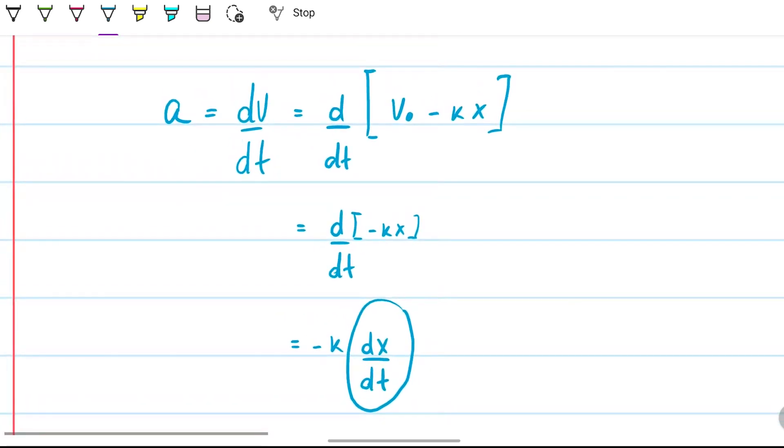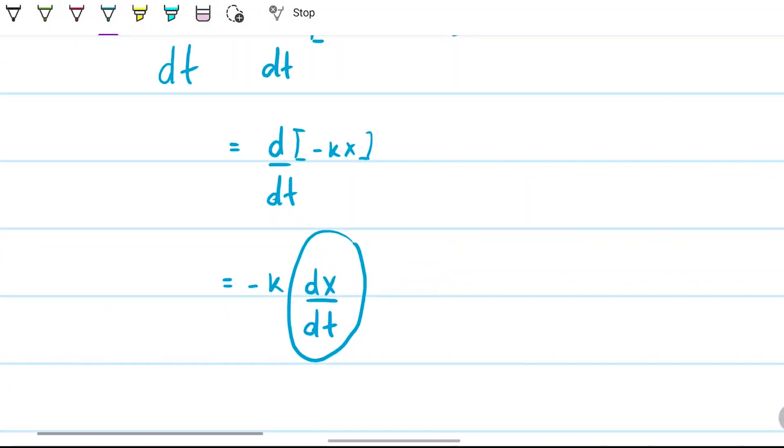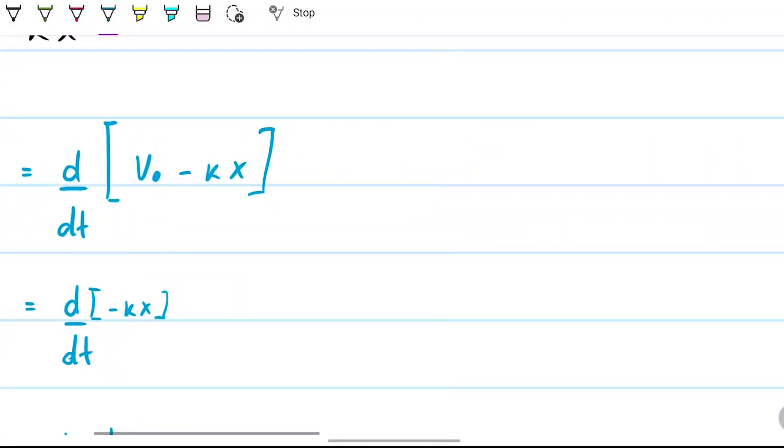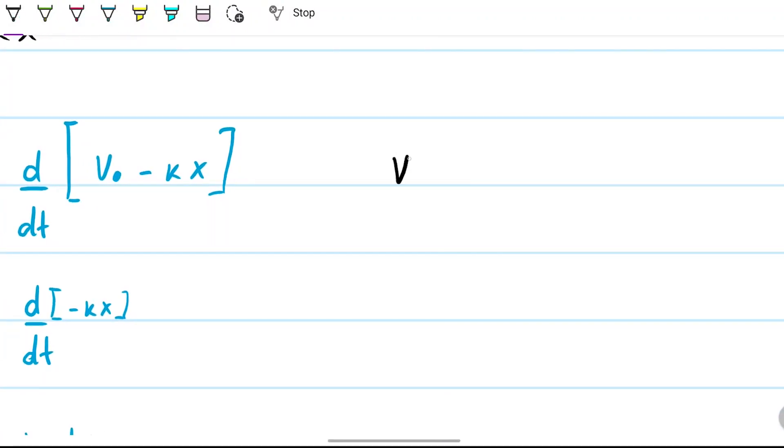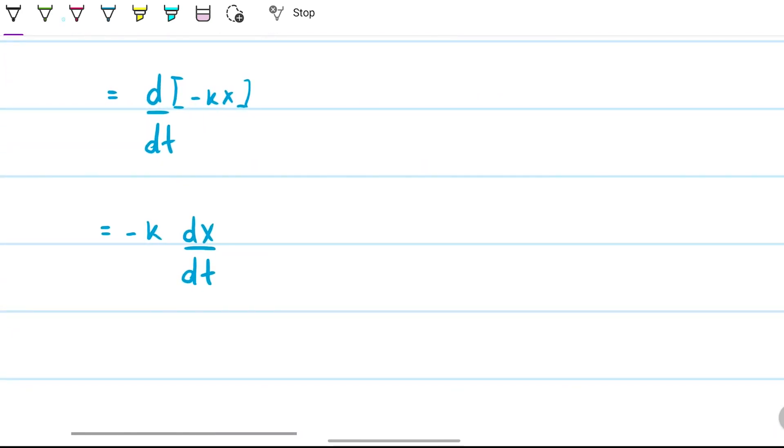Well what is this? This is the definition for the velocity. The velocity as we know is just the way the position changes with time. So if that's the case, where I have this, I can substitute by the velocity. So therefore this equals minus k times the velocity.